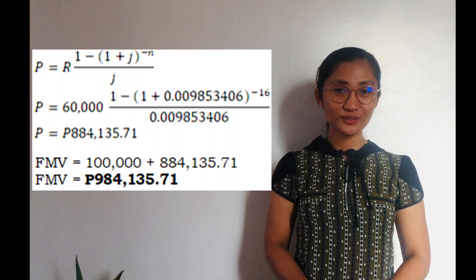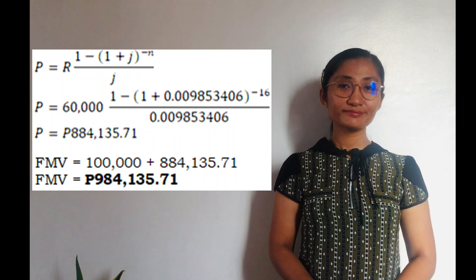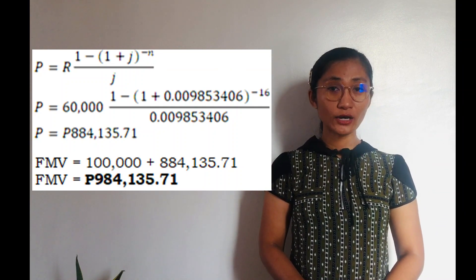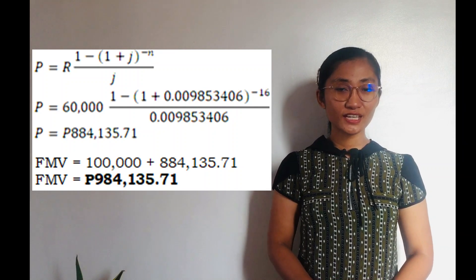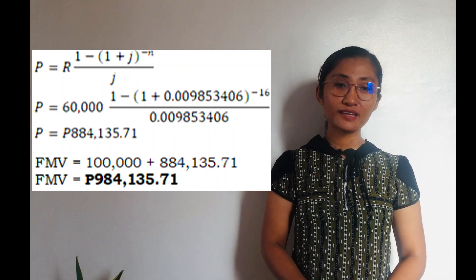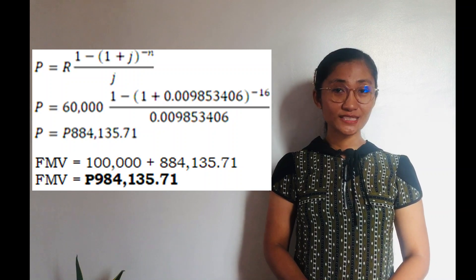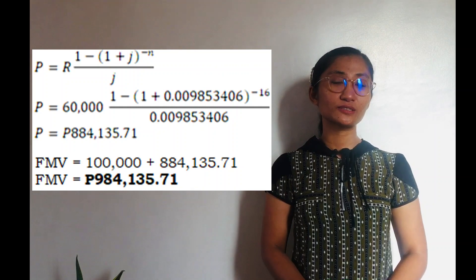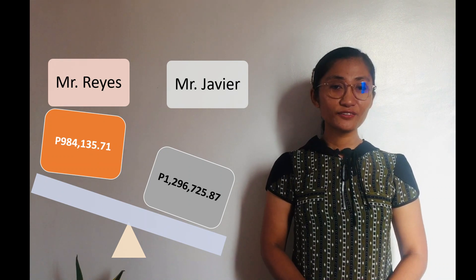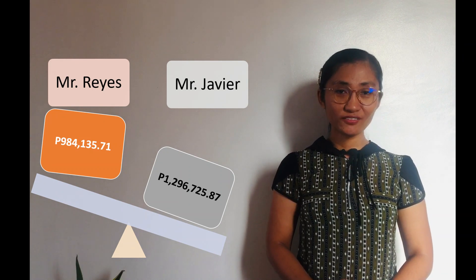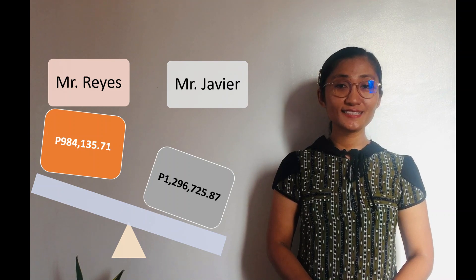To solve for the fair market value of Mr. Reyes' offer, we use FMV equals DP plus PV. By substitution, the down payment is ₱100,000 plus the present value of ₱884,135.71, giving a fair market value of ₱984,135.71. Therefore, Mr. Javier's offer is more valuable in the market. The difference in market values between the two offers at the beginning of the term is ₱312,590.16.